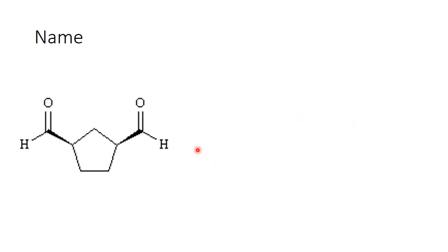Name this compound. Well, I can see that it has two aldehyde functional groups. So I'm going to call this cyclohexane dicarbaldehyde. Where are they located? 1,3 to each other, and notice they're cis. So it's cis-1,3-cyclopentane dicarbaldehyde.